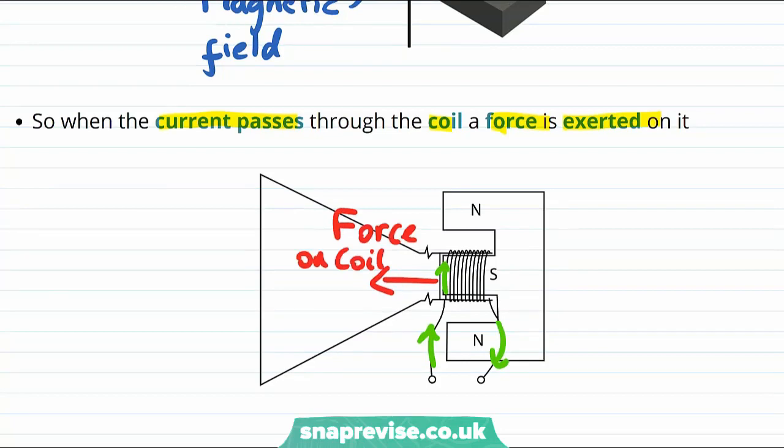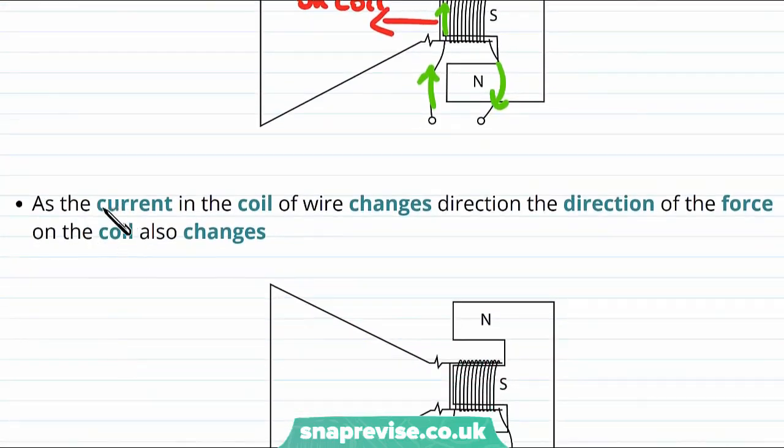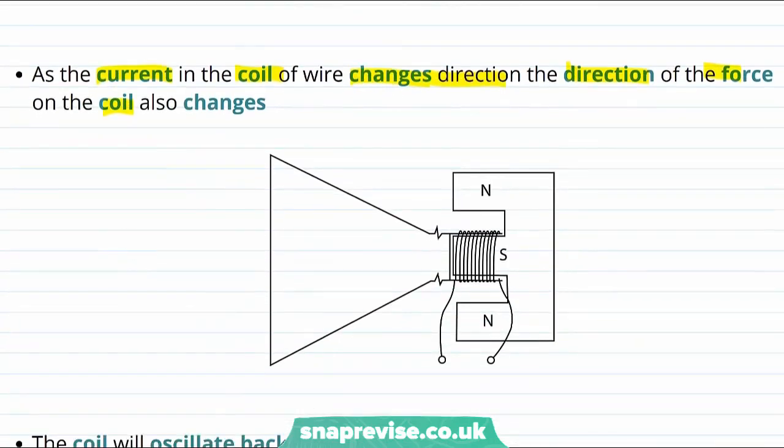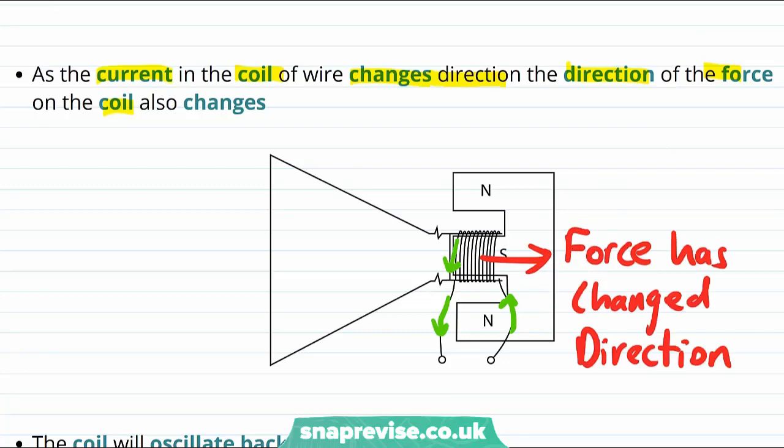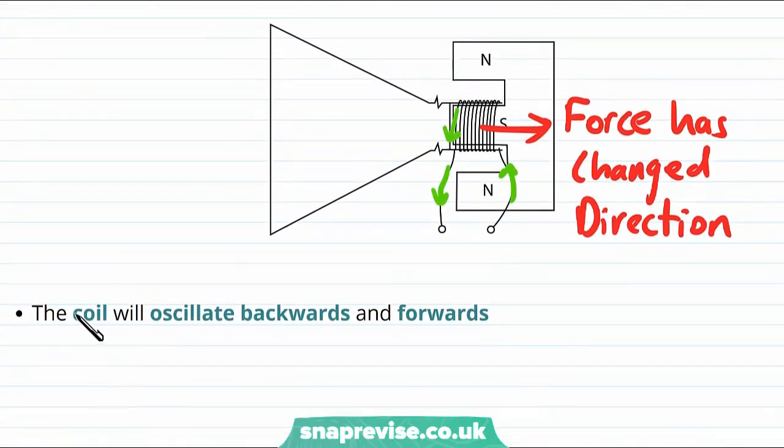But this current is alternating. It keeps changing direction because the coil was connected to an alternating potential difference. As the current in the coil of wire changes direction, this will change the direction of the force on the coil. So now we imagine that we have the current flowing the opposite way round, and as a result the force on the coil is in the opposite direction. So the force on the coil changes every time the current changes, and this means that this coil is going to oscillate backwards and forwards.